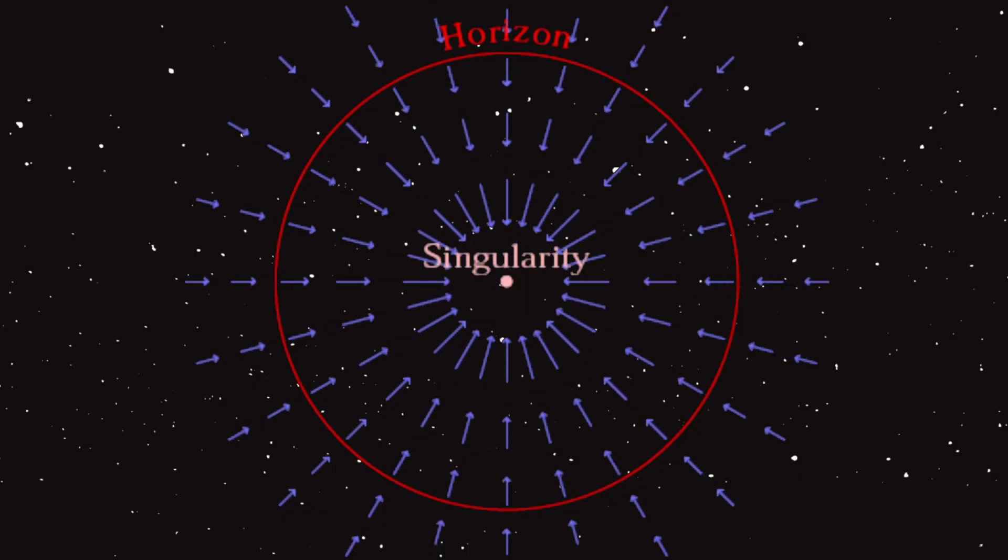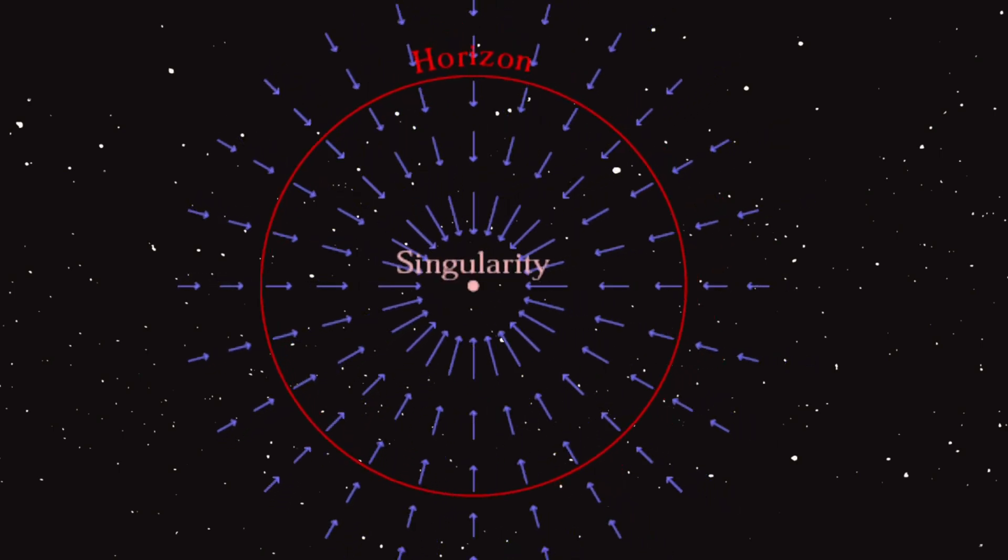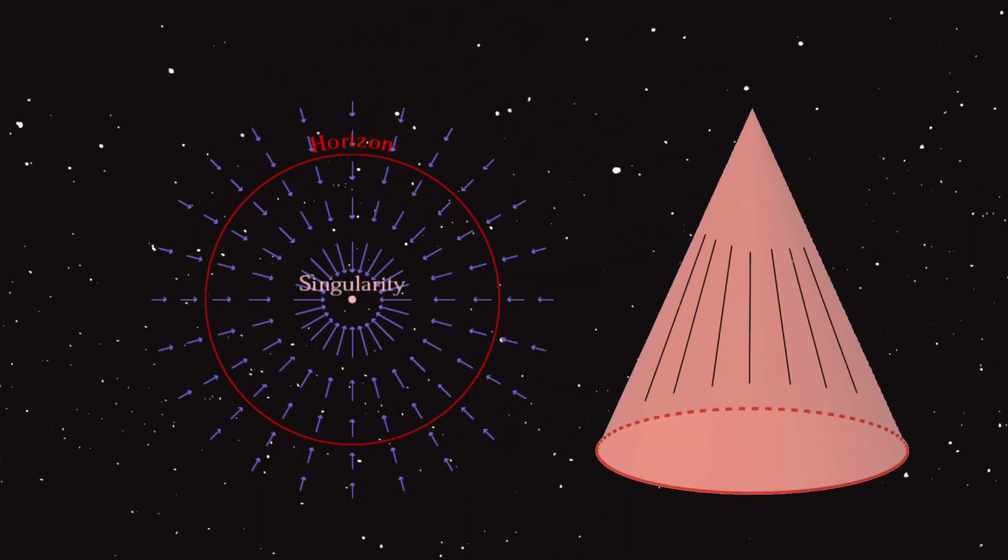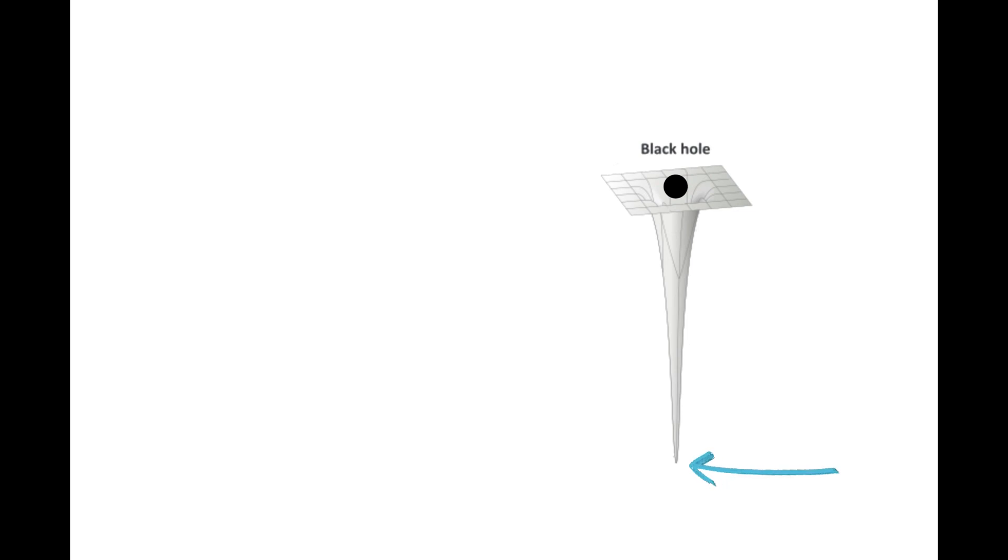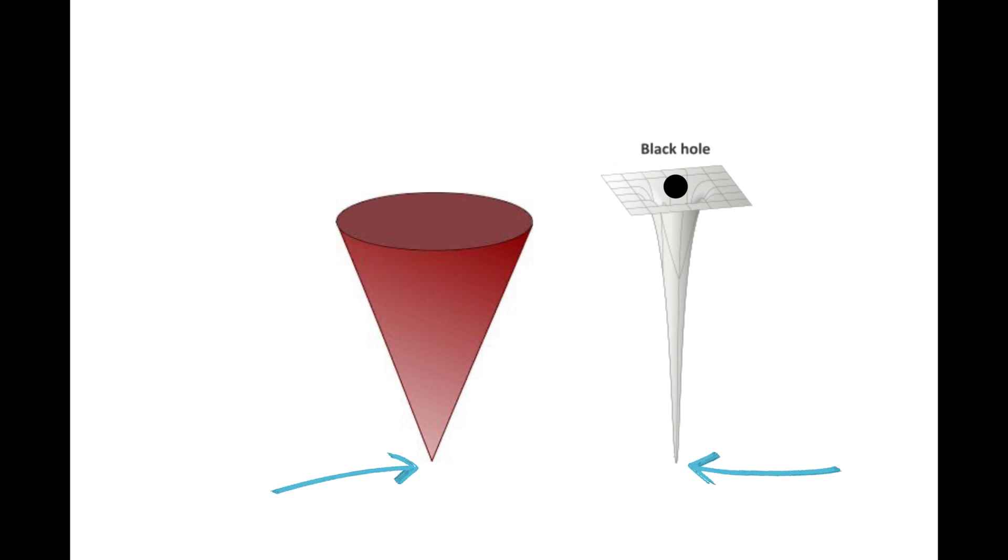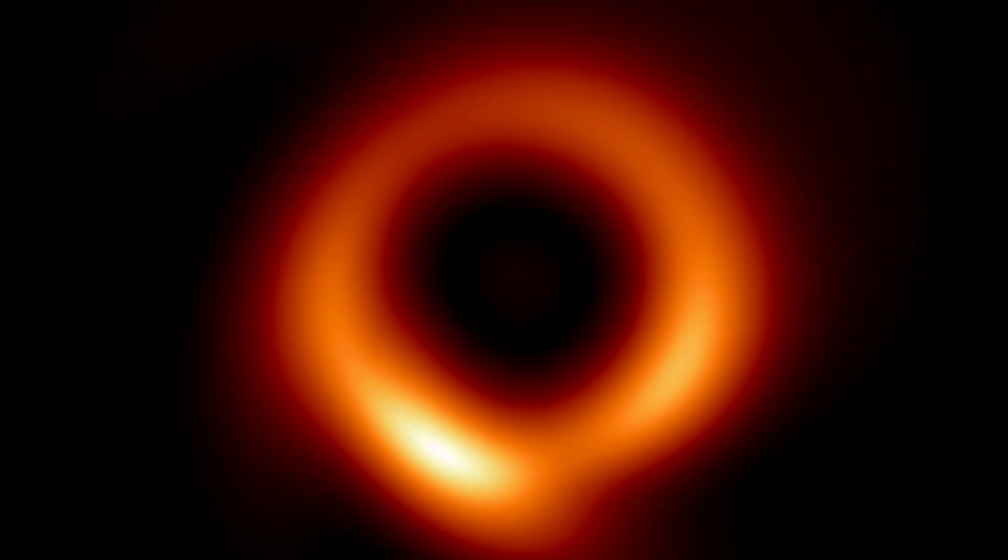So we have black holes, anything that falls in reaches a single point, and cones, any path extended towards the tip reaches a single point. Black hole, single point. Cone, single point. A black hole and a cone.